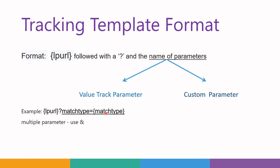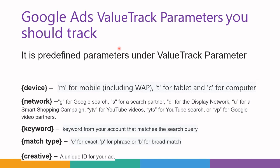There are three types of match type: broad match, phrase match, and exact match. If you use multiple value track parameters, you should add the ampersand symbol between them. I have given a list of Google Ads value track parameters in the description link — you can get it from there.